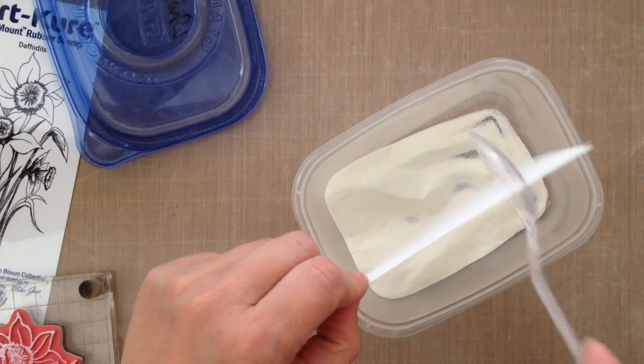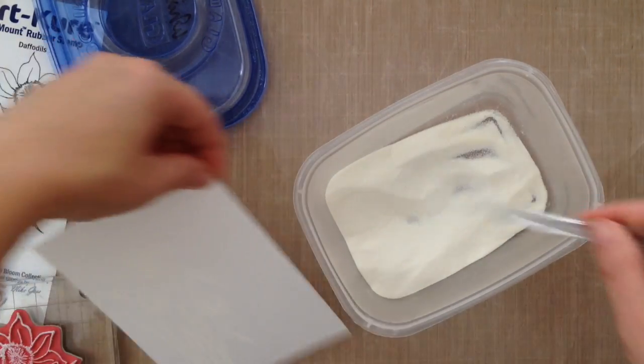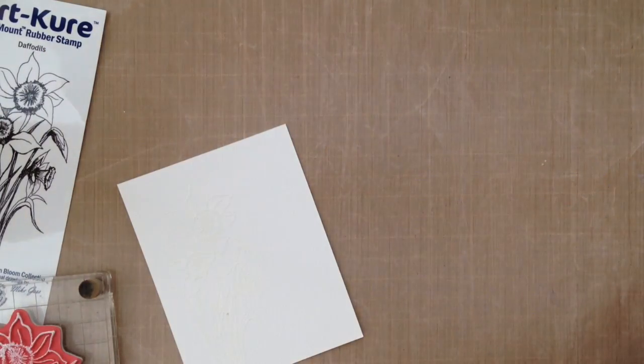So this is totally an optional thing for you. This is just personal preference for me. So that is some white Hero Arts embossing powder there that I sprinkled over the top. And then I'm going to heat set that with my heat gun here.